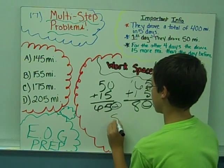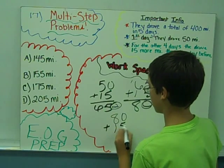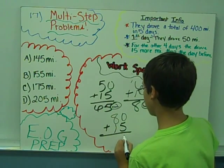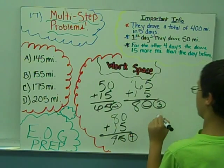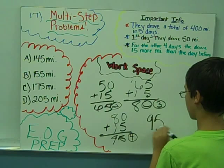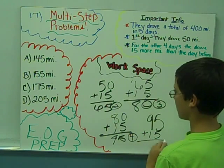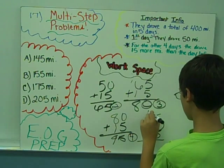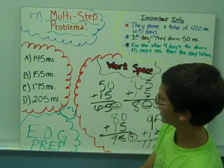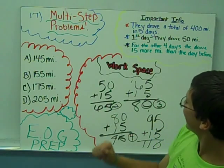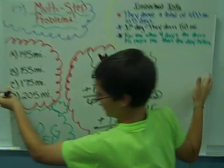And if you do 80 plus 15, you will get 95. 95 plus 15, you get 110. That is not an answer up there. So we're going to have to redo this after problem number 18.